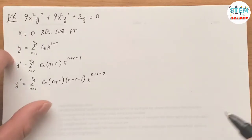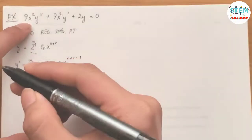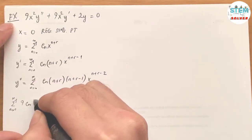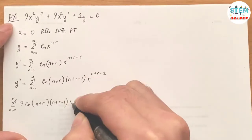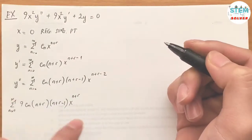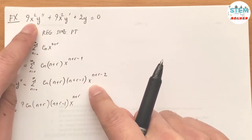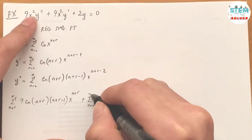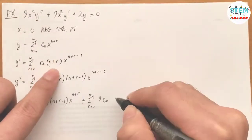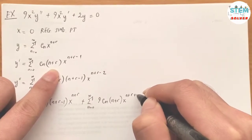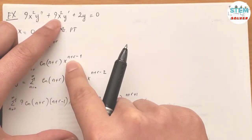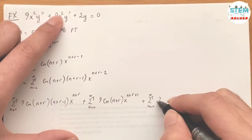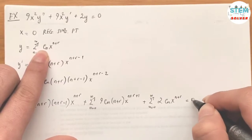Now we plug these into the differential equation. The first term gives a power series with n(n+r)(n+r−1) times x to the n+r, since x² times x^(n+r−2) gives x^(n+r). The second term gives a power series with n(n+r) times x^(n+r+1), since x² times x^(n+r−1) gives x^(n+r+1). The third term gives a power series with cₙ times x^(n+r) equals 0.